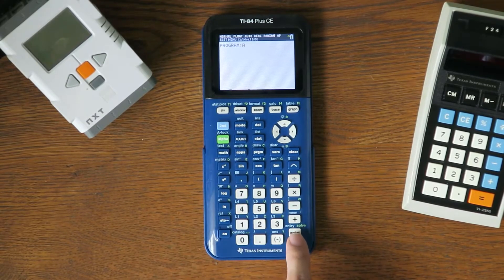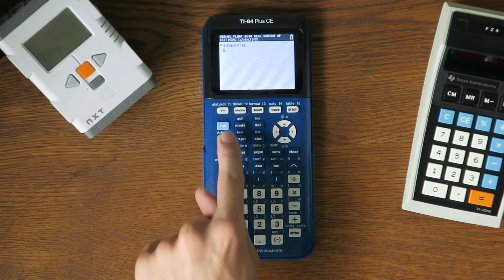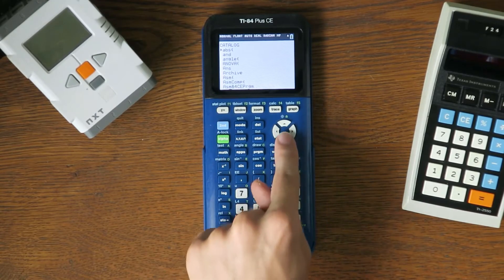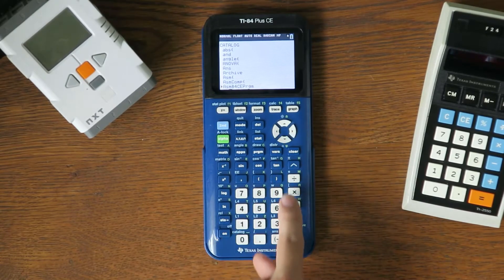Now press second, then zero to open up the catalog. Scroll down to ASM84CEPRGM and press enter.